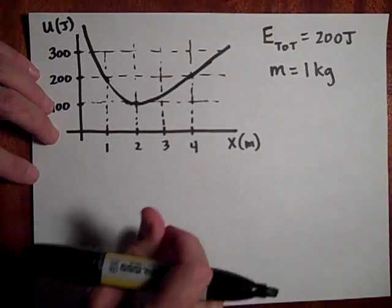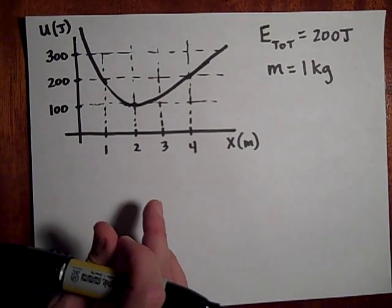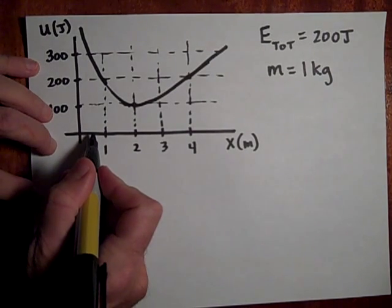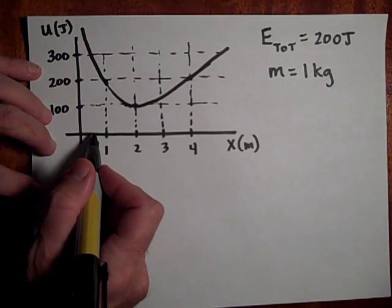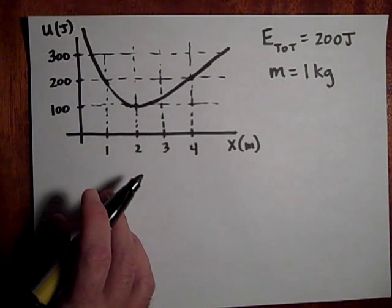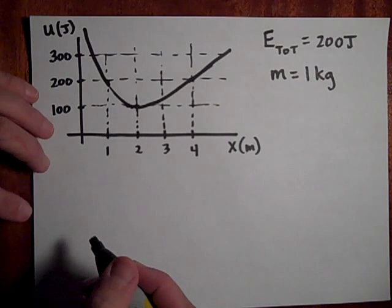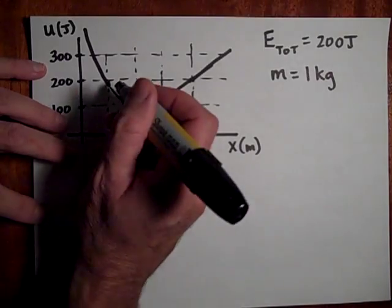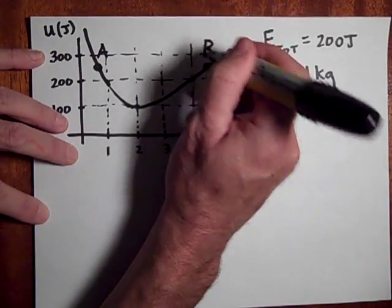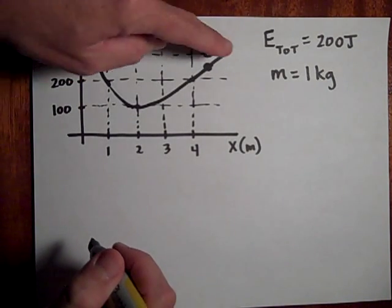Here's a potential energy function where the mass is 1 kilogram and total energy is 200 joules. The question is: can this object reach the half-meter mark? At the half-meter mark, the potential energy is about 300 joules, but the object only has 200 joules total — so it cannot reach there. It can reach positions between 1 and 4 meters.